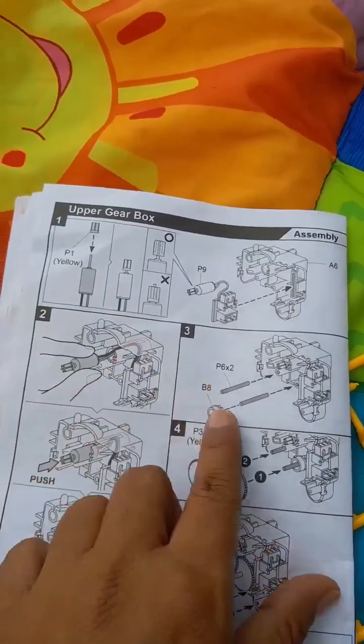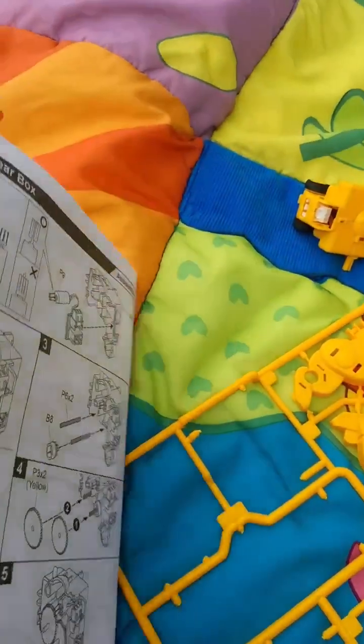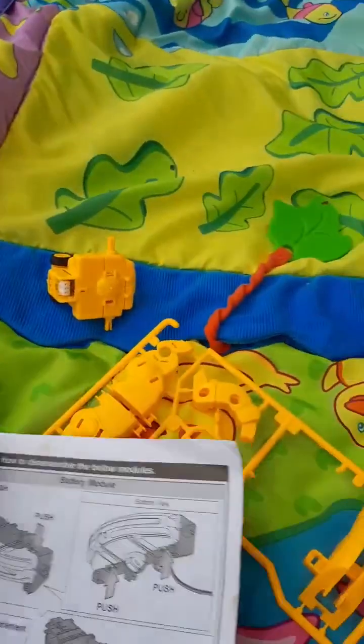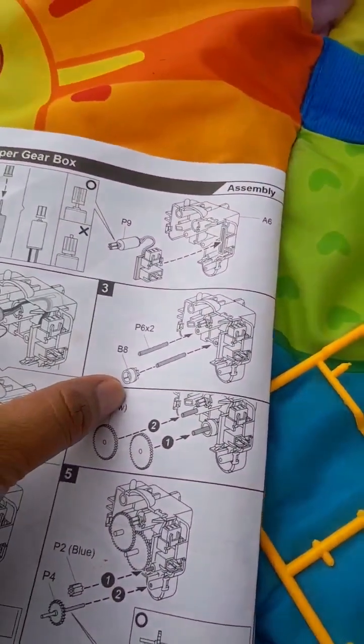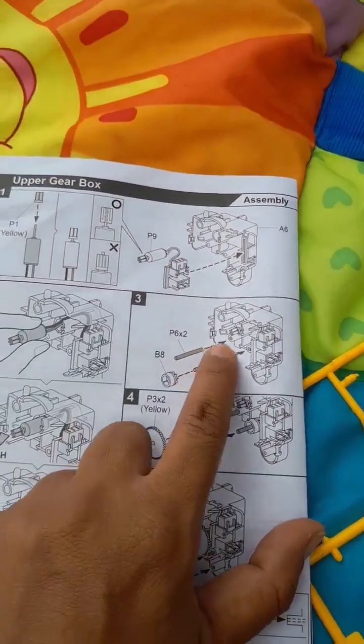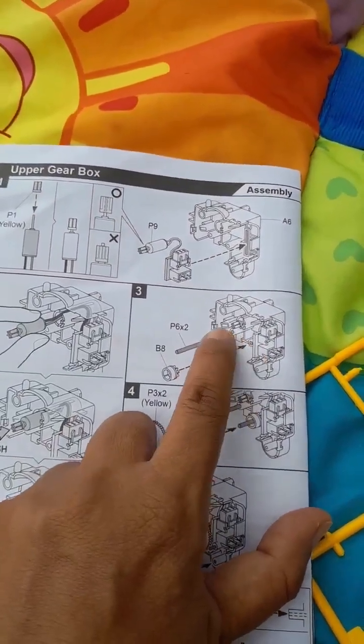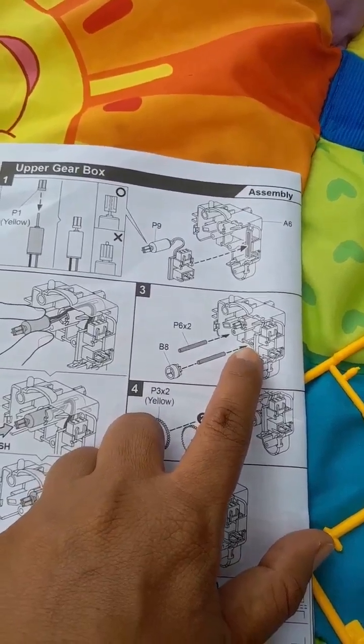Now we need two P6 parts which are the cylindrical round shafts. We need two round shafts P6 and one B8 part. Place the P6 part in these two holes and in the bottom right hole over the shaft, place this B8 part.